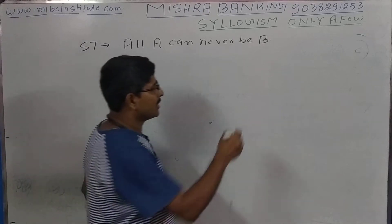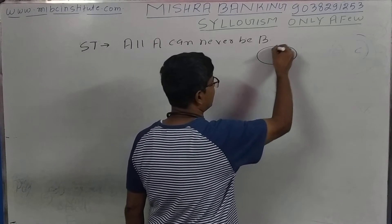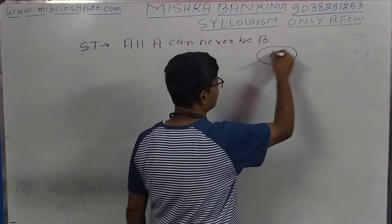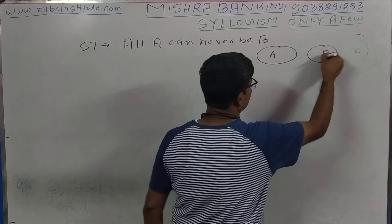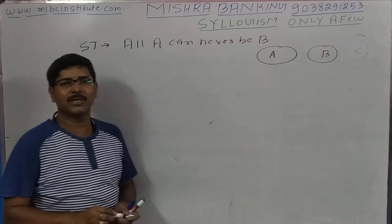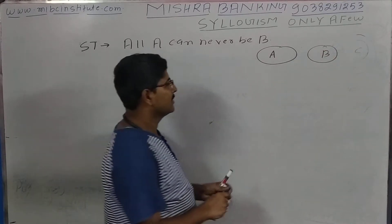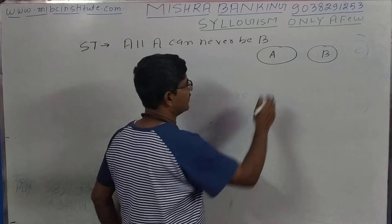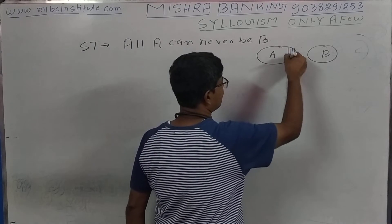This diagram is 'some A or not B.' Which portion has A, and which is not B — that is 'some A or not B.'